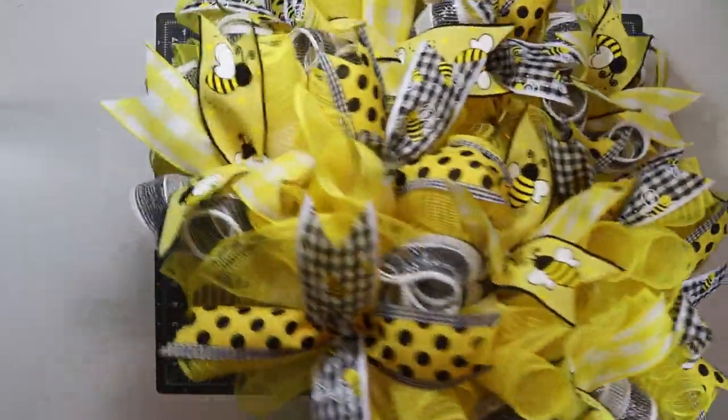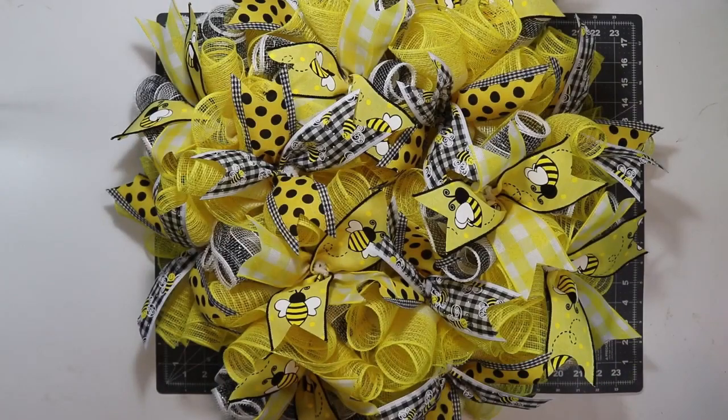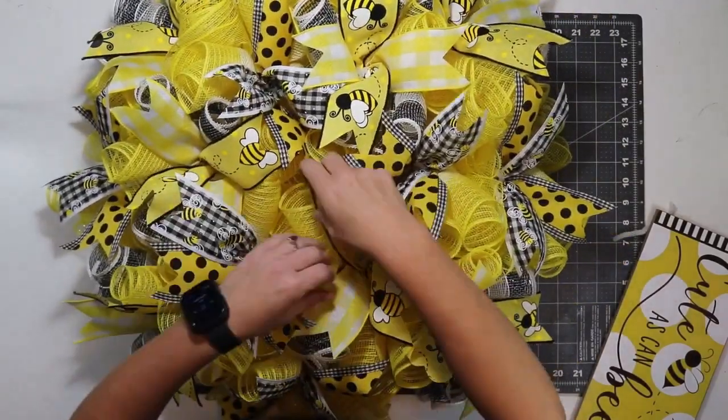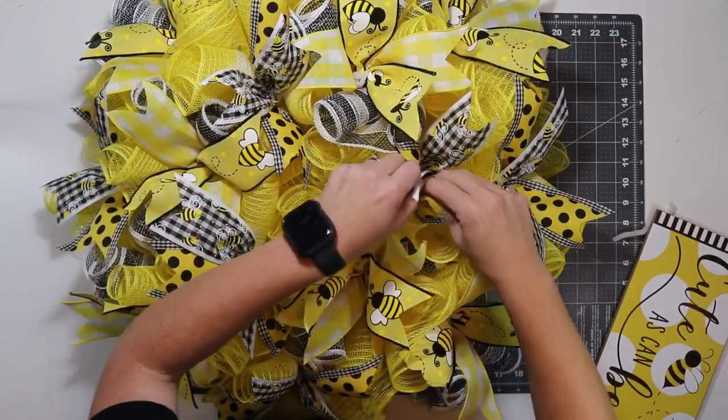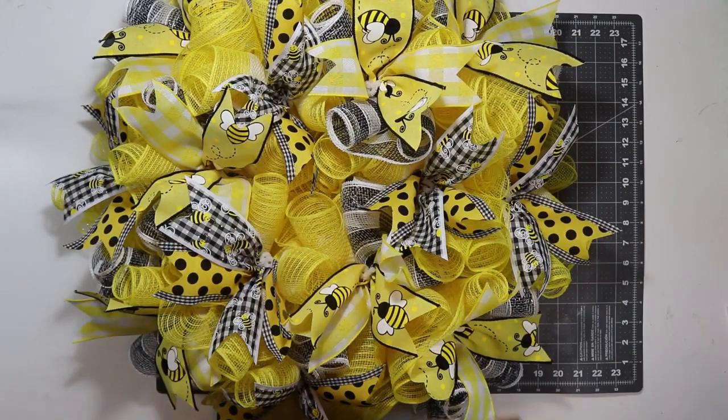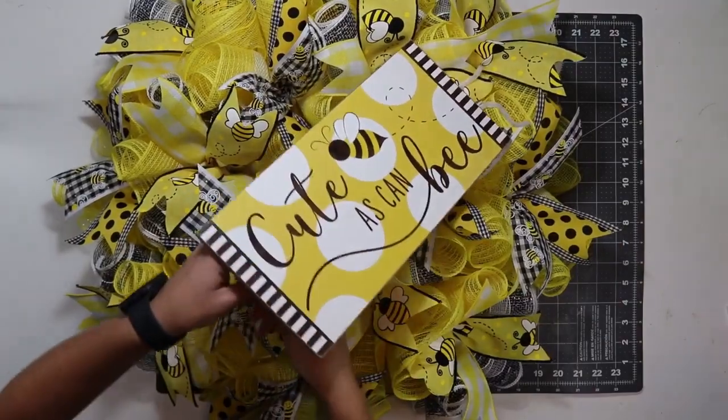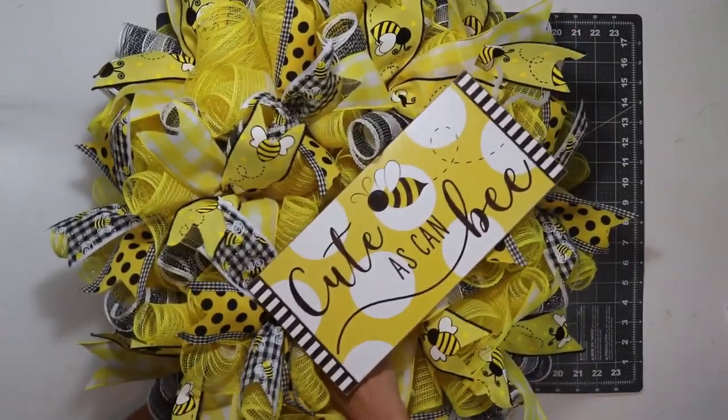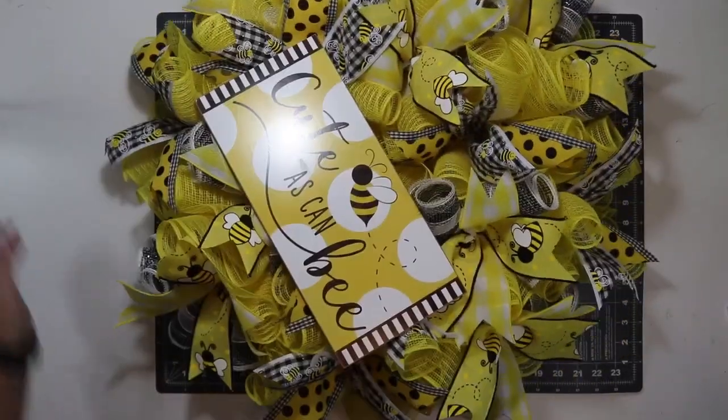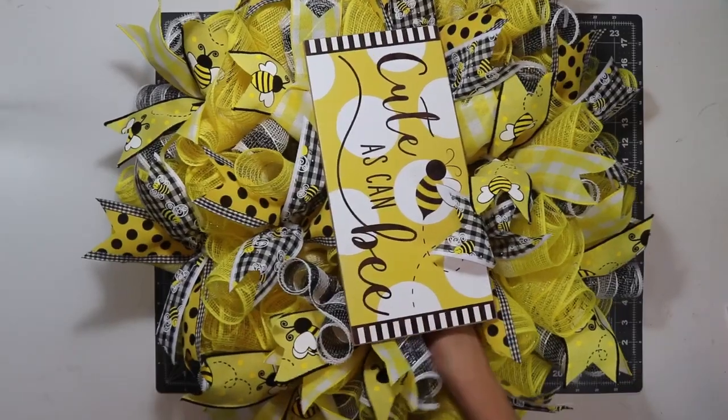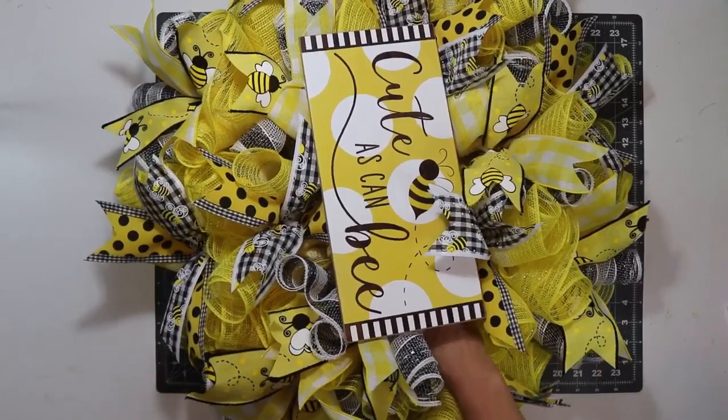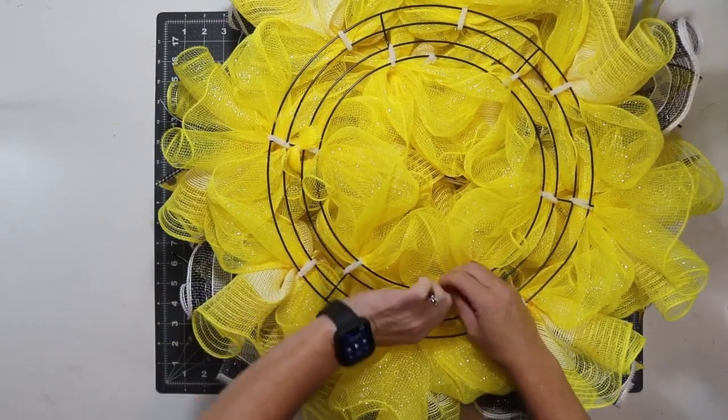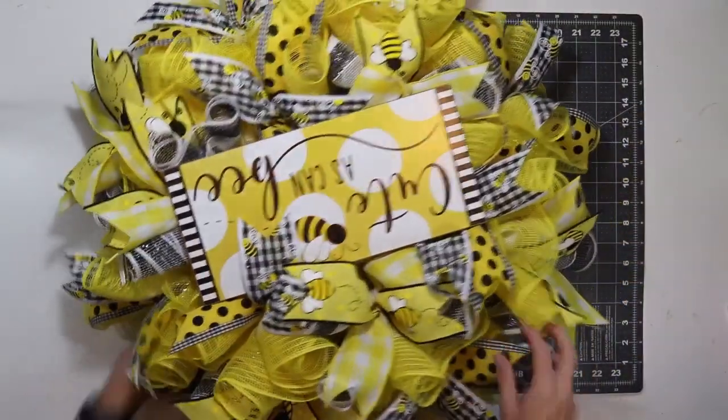I finished adding all my ribbons. You can see this is a really full wreath. It looks so pretty. I'm really, really, really in love with this. I think I'll add it and see if I like it. I'm just going to move the ribbons all the way a little bit so I don't lose them all. Yeah, I definitely want it right here. All right, I'm going to feed it through to the back.